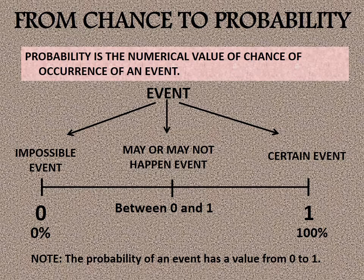A certain event has 100% chance of occurrence, therefore the probability of a certain or sure event is 1. The probability of all other events which may or may not happen lies between 0 and 1. This gives us a very important concept: the probability of an event always has a value from 0 to 1. It can never be less than 0 and cannot be more than 1.